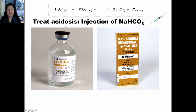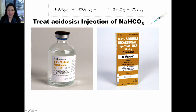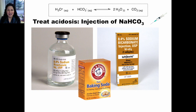Acidosis is treated in the clinic by injection of sodium bicarbonate. Sodium bicarbonate is an ionic compound and it dissociates in water to give you sodium ions and bicarbonate ions. Injecting bicarbonate into the blood will increase the concentration of bicarbonate. The extra bicarbonate will react with extra acid and shift this equilibrium to the right to produce more carbon dioxide. Sodium bicarbonate is the same compound you have in baking soda.